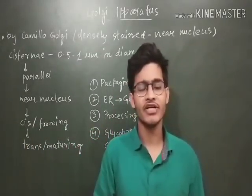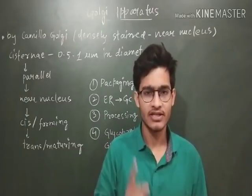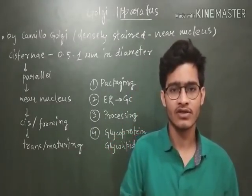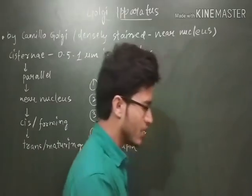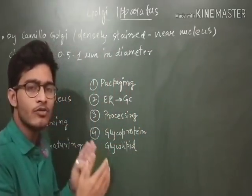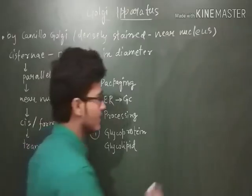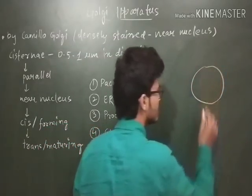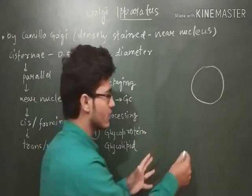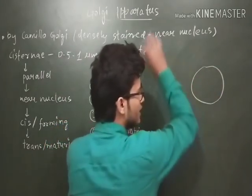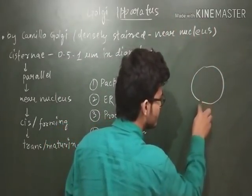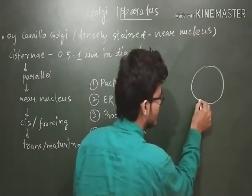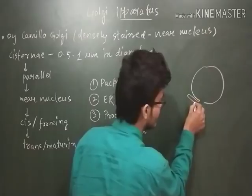Hello friends and welcome back to another video from Vipin Sharma Biology Tutorials. In this video we are going to talk about another important organelle, that is Golgi body. In the last video we talked about the endoplasmic reticulum, which is attached to the nucleus — very close to it. If this is the nucleus and this board is a cell, then to the outer nuclear membrane the ER is directly connected.